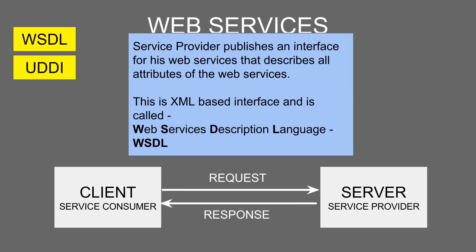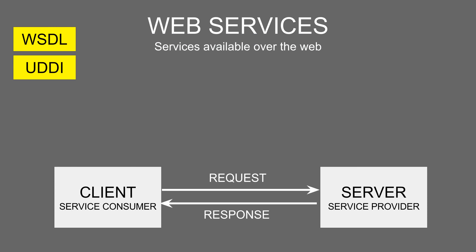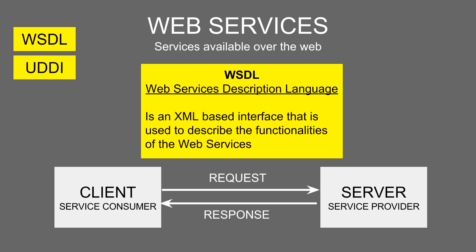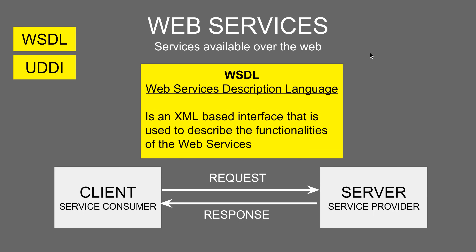Web Services Description Language, or WSDL, is an XML-based interface for web services which describes all the attributes and functionality of the web service. It is XML-based so that it is machine readable, and we can use tools and programming languages to parse this document and generate the request and response structure.